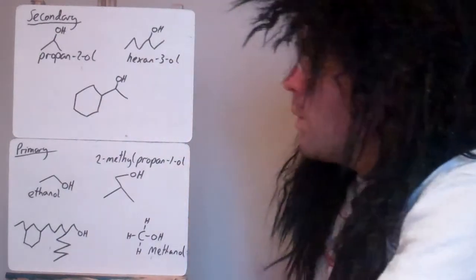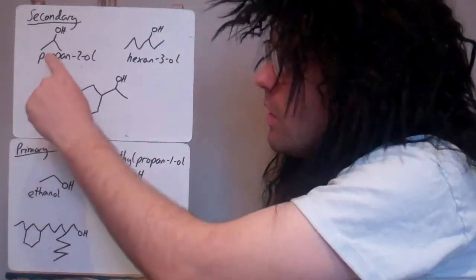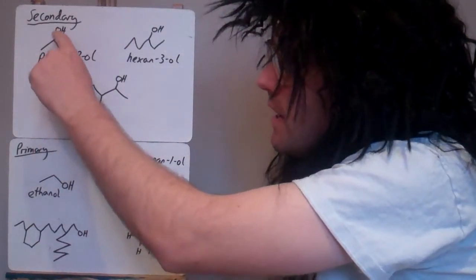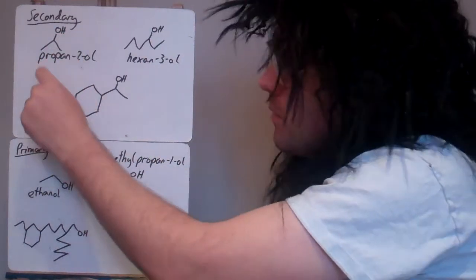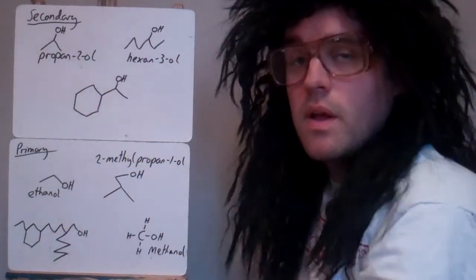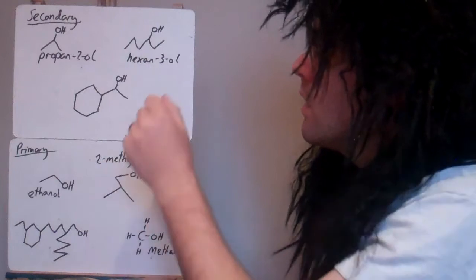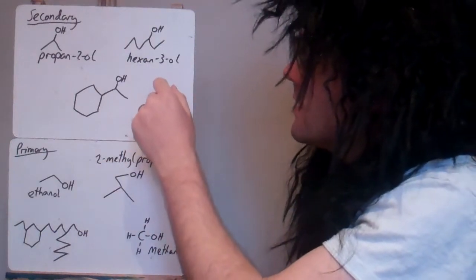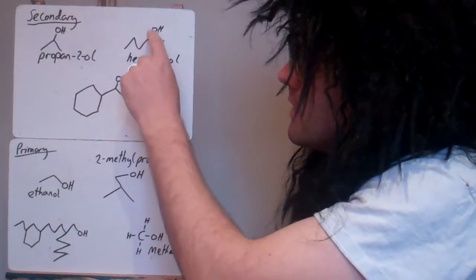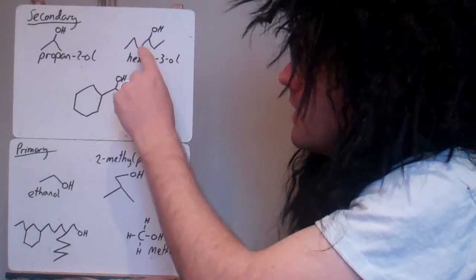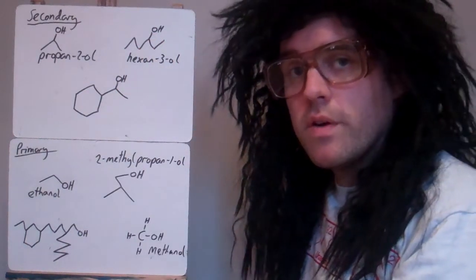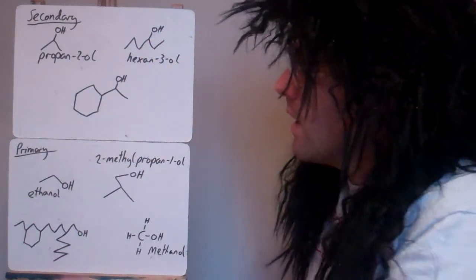For secondary, we've got propan-2-ol. The carbon that's attached to the OH is attached to 2 other carbons — this one and this one. That's what makes it secondary. Here in hexan-3-ol, we've got this carbon attached to the OH and it's attached to that carbon and that carbon, so it's attached to 2 other carbons — it's secondary.